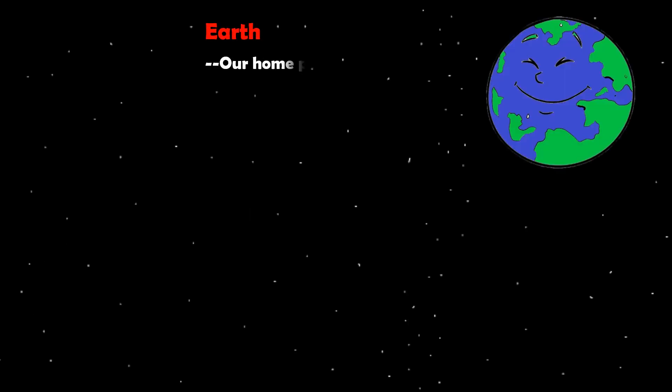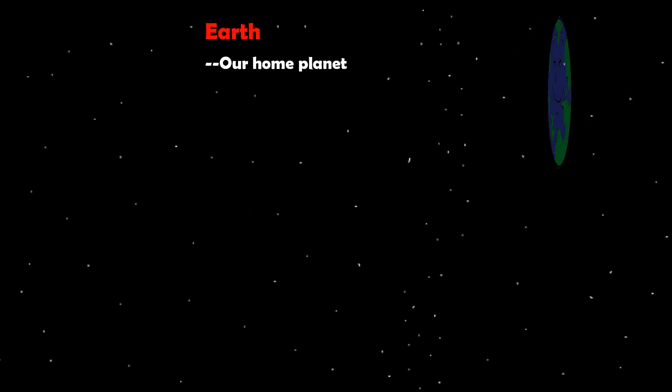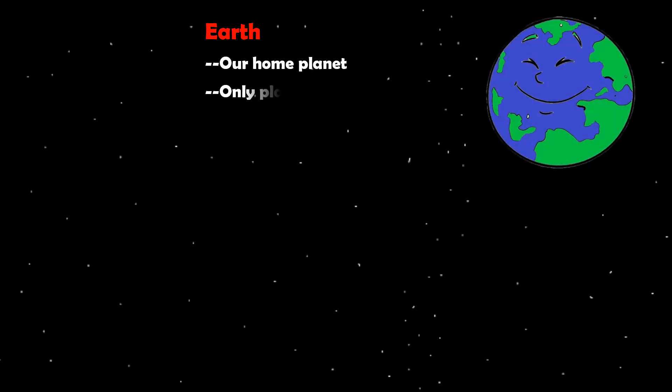Earth is our home planet. It is the third planet from the Sun. It is the only planet in our solar system that is believed to support life. It has air and water in abundance. It has one moon.